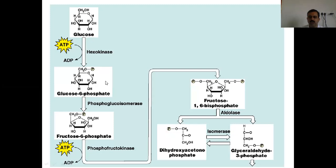Then glucose-6-phosphate gets converted into fructose-6-phosphate. Fructose is a pentameric molecule. Glucose-6-phosphate gets converted into fructose-6-phosphate with the help of the enzyme phosphoglucoisomerase.